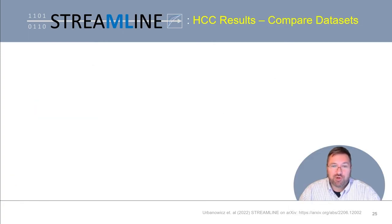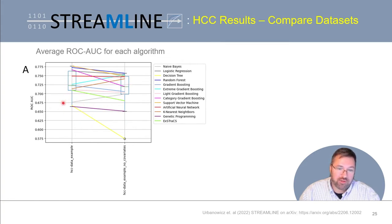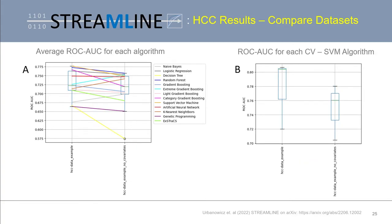The last output we'll mention is produced whenever Streamline is run on two or more datasets at once. Here we're comparing performance between datasets with box plots — the first box plot gives the average ROC area under the curve for each algorithm as box plot values for both datasets, with a trend overlaid comparing performance from one dataset to the next. For example, we can see that decision trees work better in the first dataset than the second. A similar box plot can compare ROC area under the curve across all cross-validation models generated by a single algorithm — for instance, support vector machines — which can be a more reliable look at performance differences between two or more datasets.